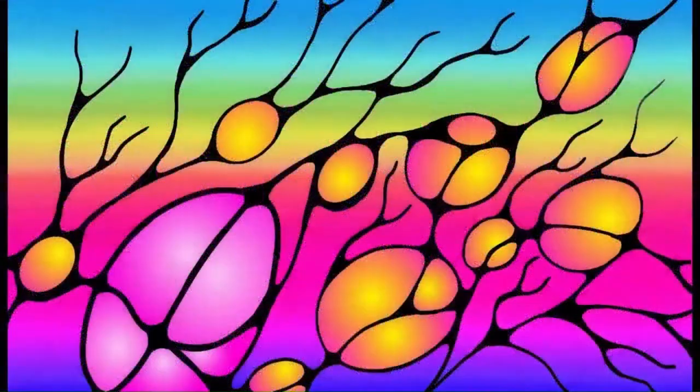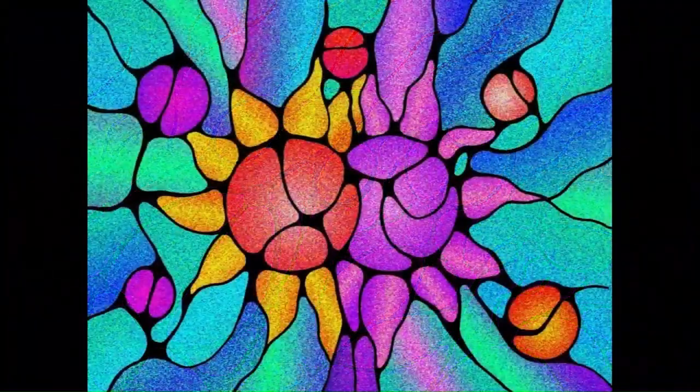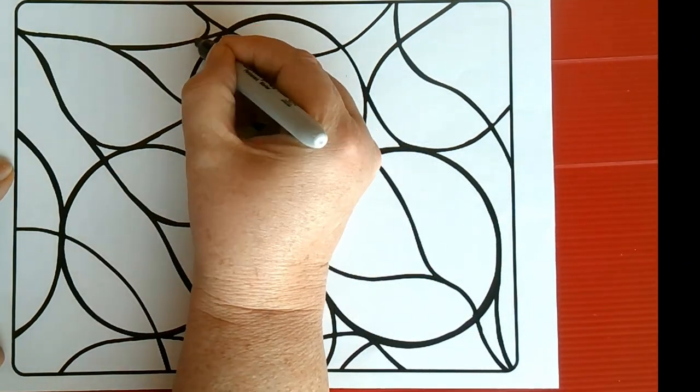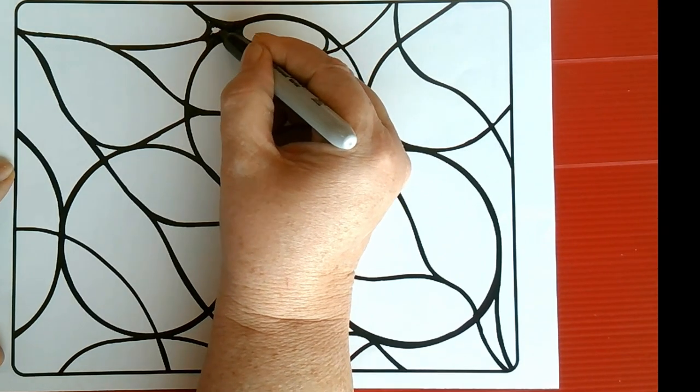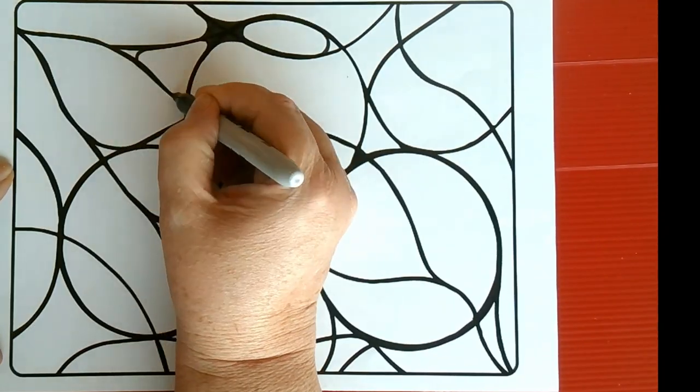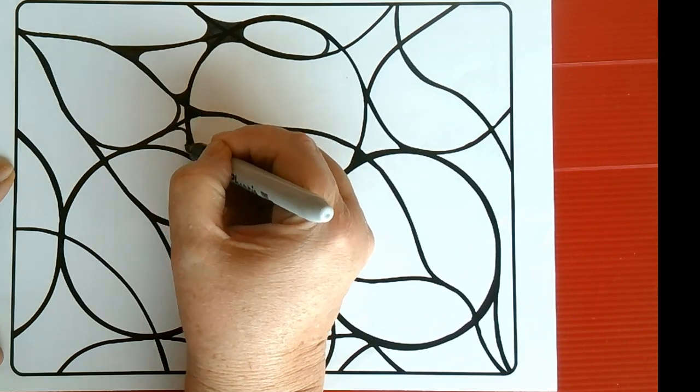One of the core principles of neurographic art is to round off corners while creating an image. This means that part of the creation process is rounding off sharp corners where lines intersect.